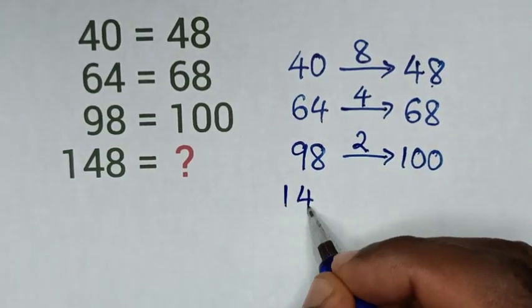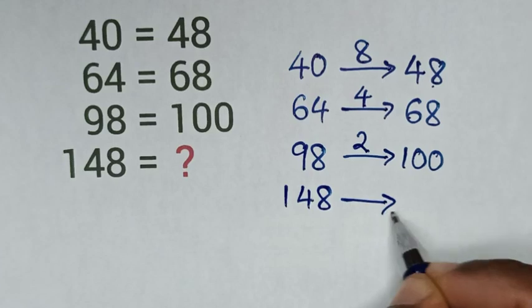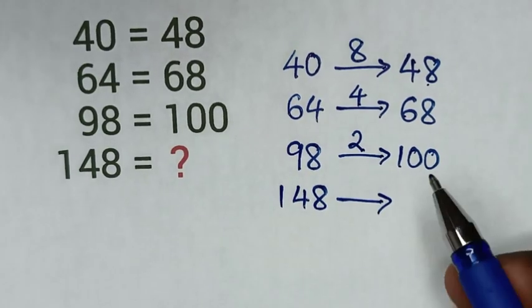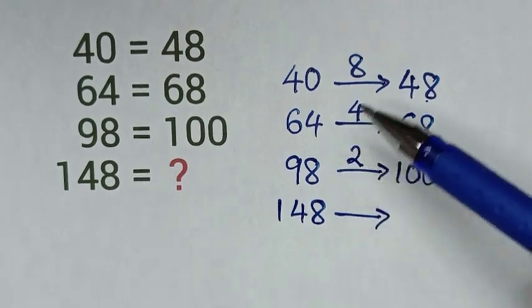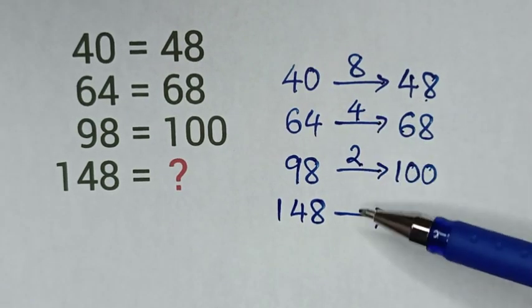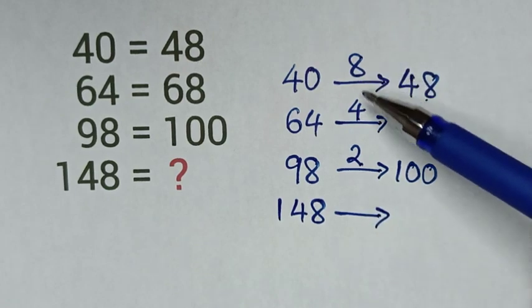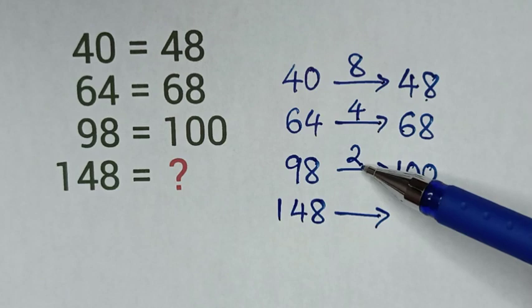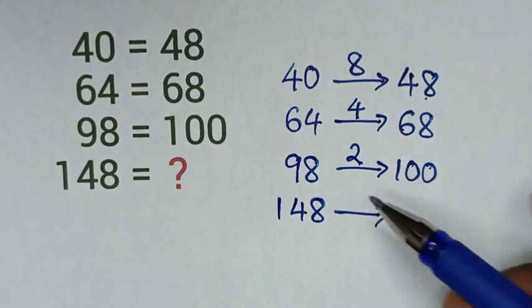So from 148 to what number? Looking at the differences: 8, 4, 2. We can see that 8 divided by 2 is 4, 4 divided by 2 is 2, and 2 divided by 2 is 1.